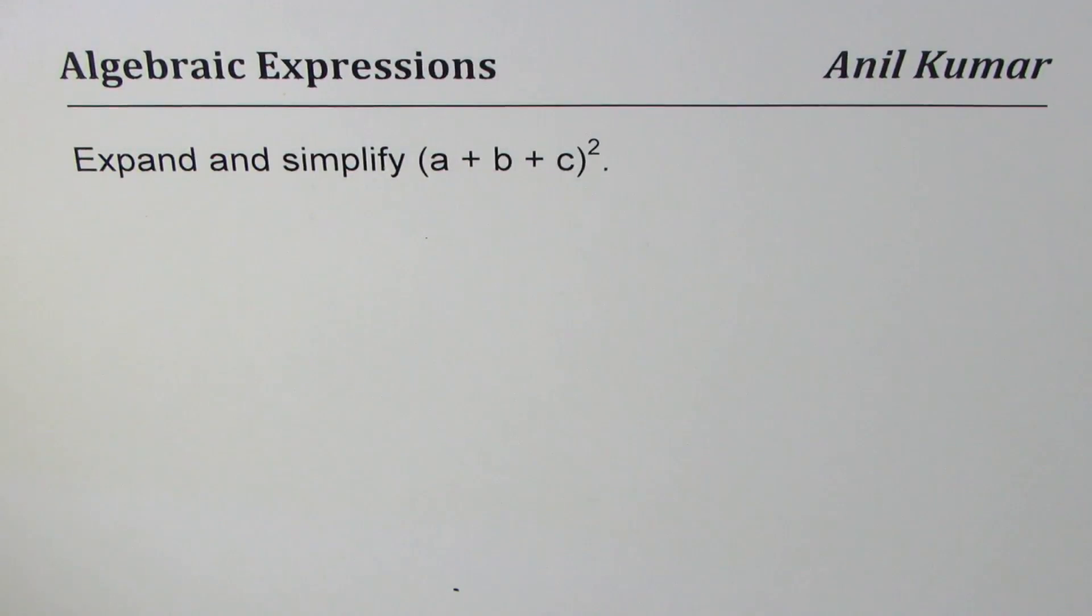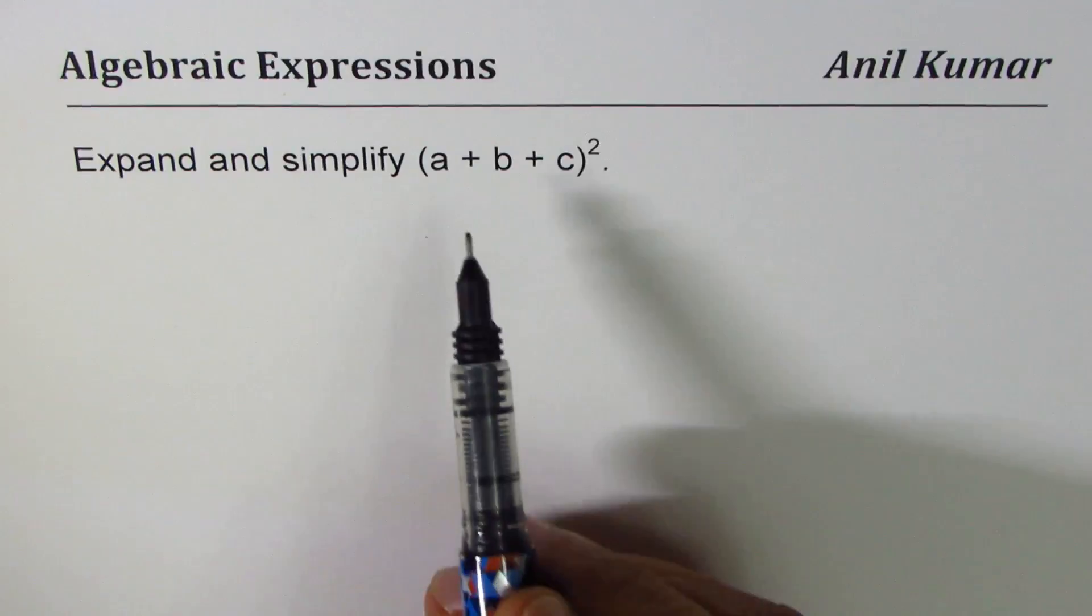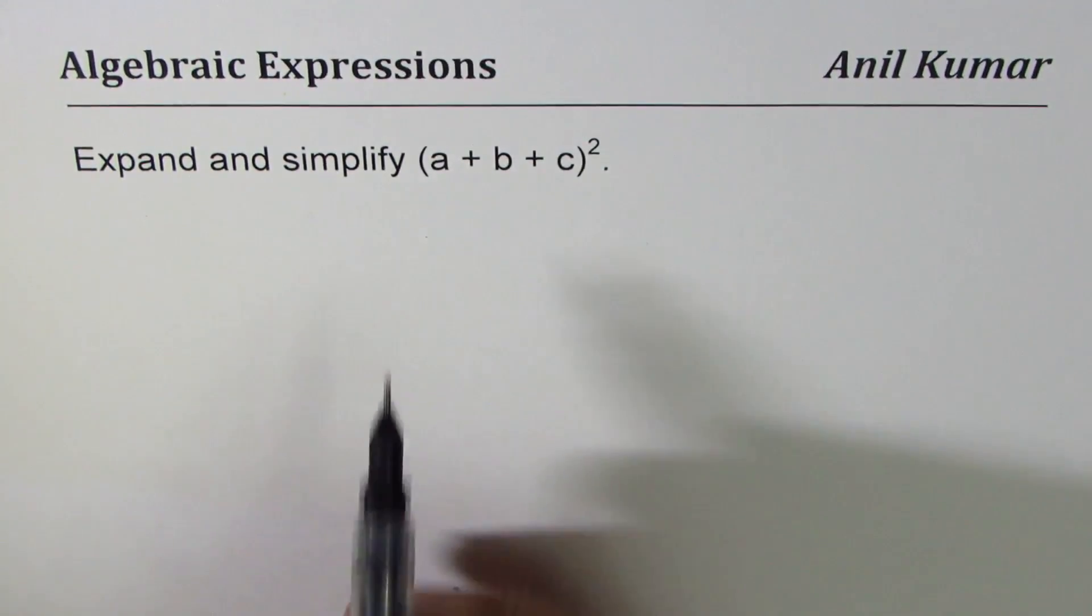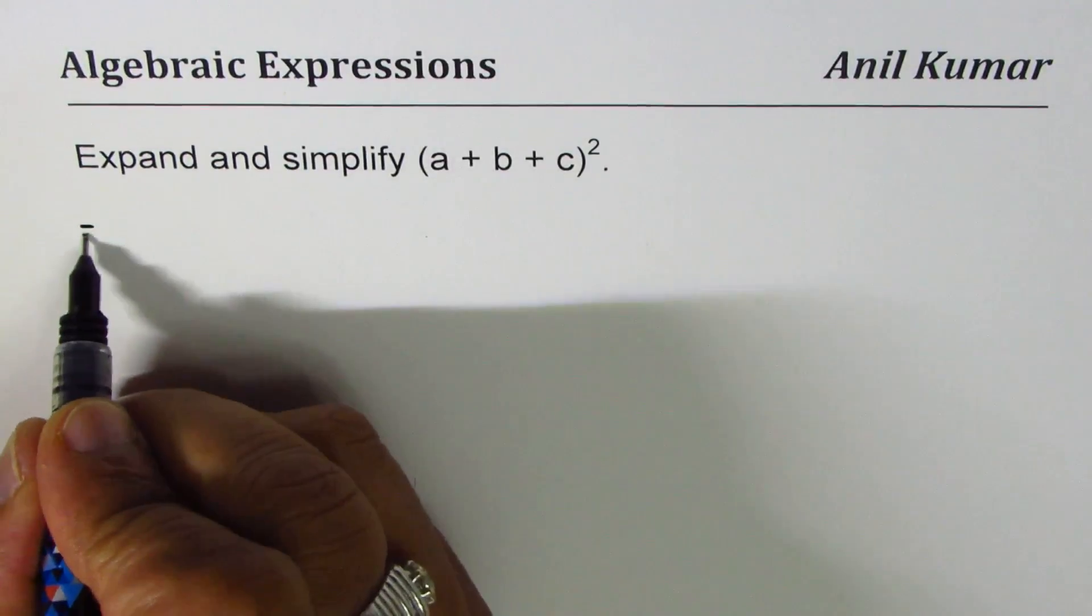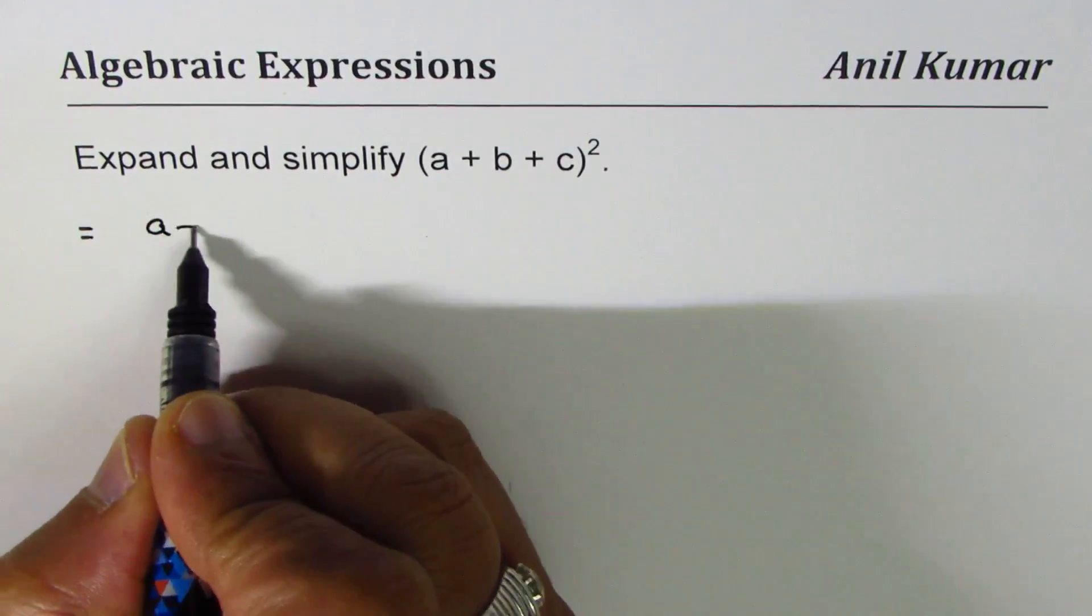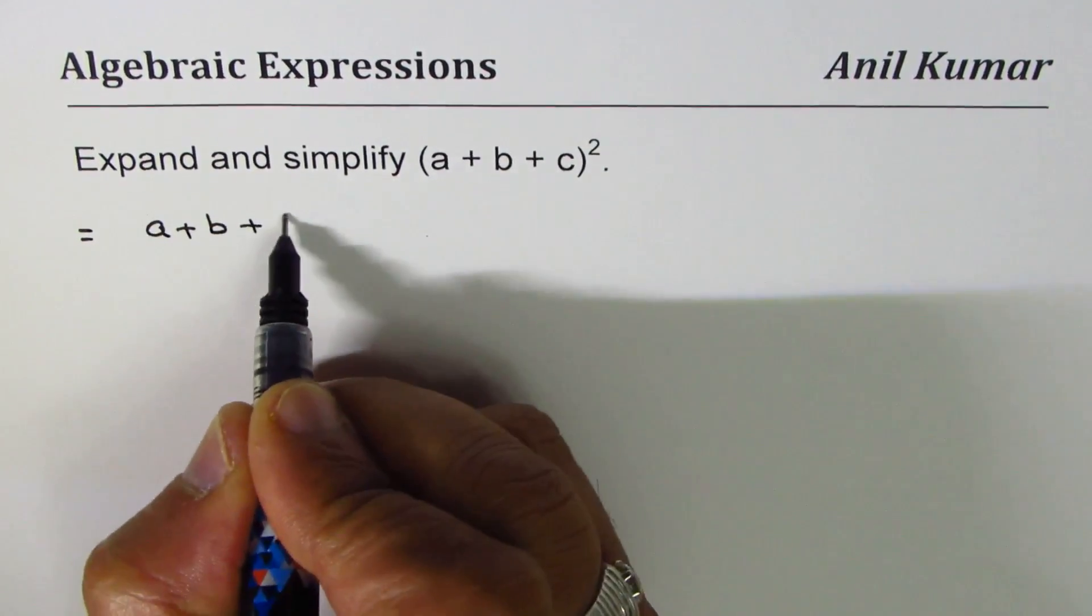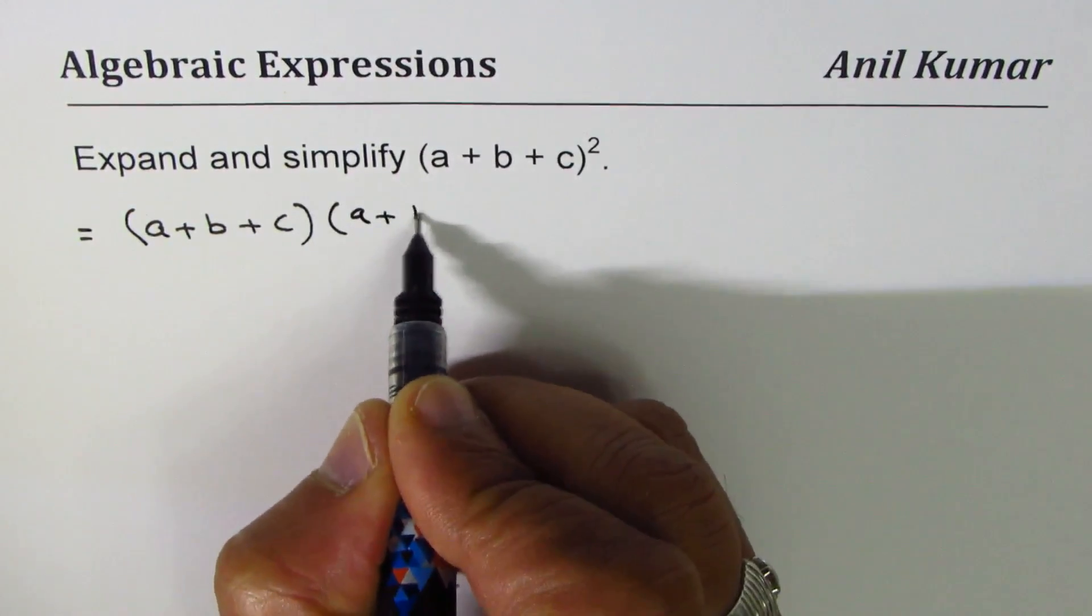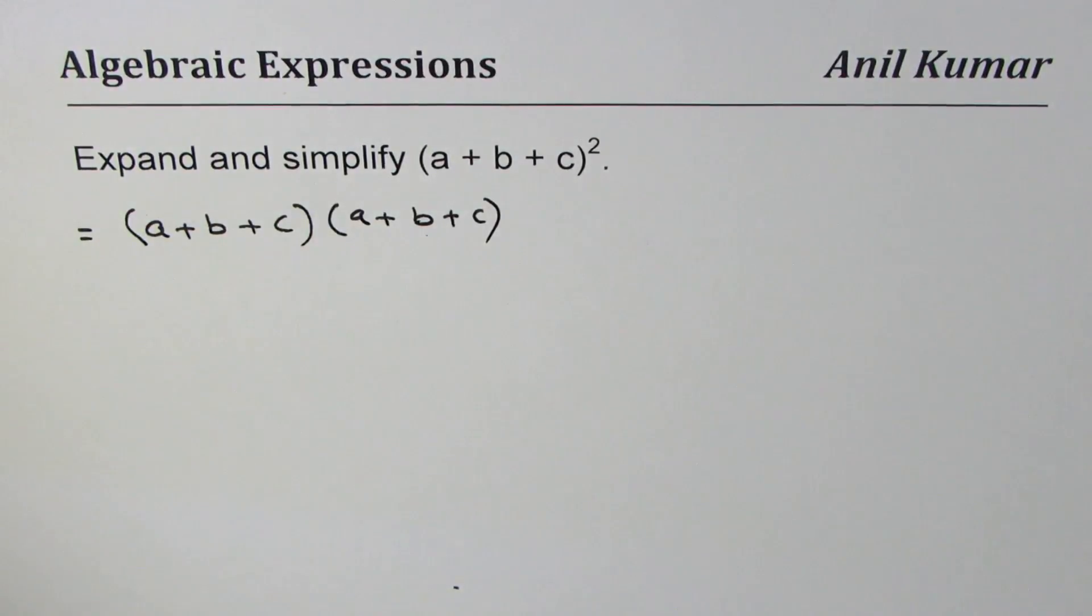I'm Anil Kumar sharing with you a question from my student and I hope its solution helps you all. The question is to expand and simplify (a + b + c)². Now to do this, what you can do is a + b + c times a + b + c, multiply and expand.